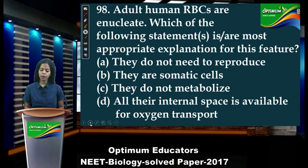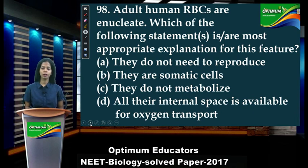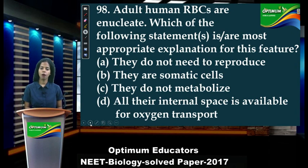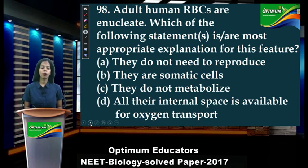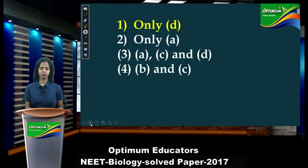Question 98: 'Adult human RBCs are enucleated' — enucleated means nucleus is absent. Which statement is the most appropriate explanation for this feature? Option A: they do not need to reproduce — wrong. Option B: they are somatic cells — not necessary. Option C: they do not metabolize — also wrong. Option D: all their internal space is available for oxygen transport — this is the only correct statement. The answer is only D.